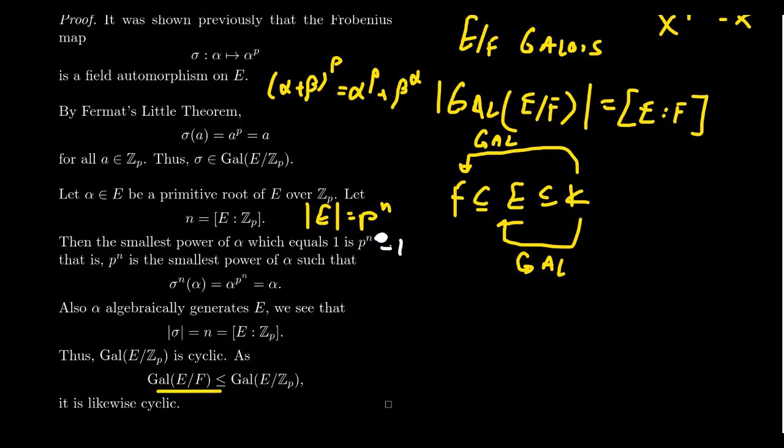The Galois group of E over F is a subgroup of E over Z_P because fixing F is more restrictive than fixing Z_P. And so if you're the subgroup of a cyclic group, then you have to also be cyclic. It'll be generated by some power of sigma as well. There's some power of the Frobenius map that'll generate this Galois group. This is what happens for every Galois group over finite fields. We have now completely classified Galois groups over finite fields.